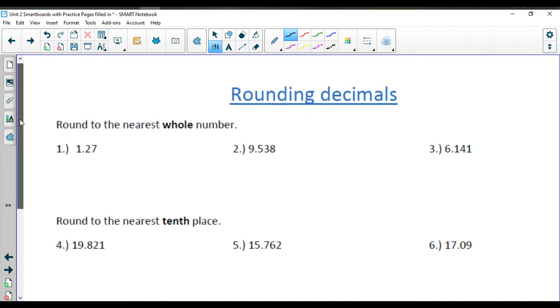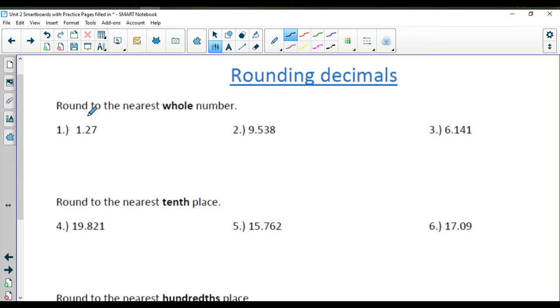In the next section, we're talking about rounding. Rounding to the nearest whole number. So we'll look just to the right of the decimal. This will round to 1. Just to the right of the decimal is a 5, which will make this round up to a 10. To the right of the decimal is a 1, which will leave this here at a 6.